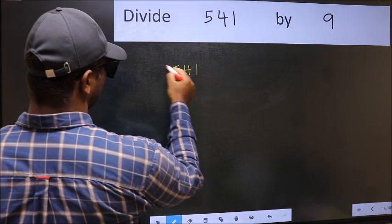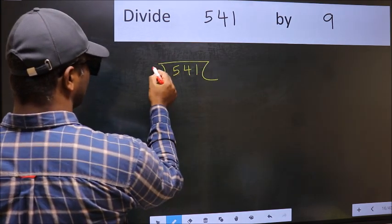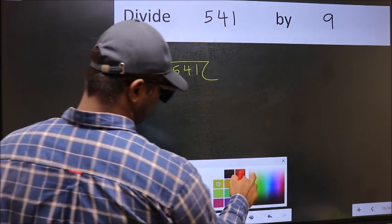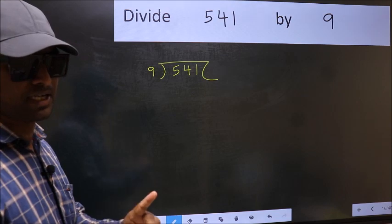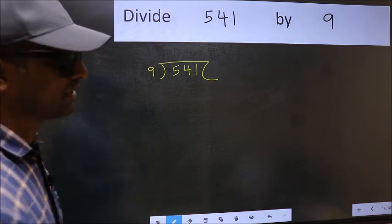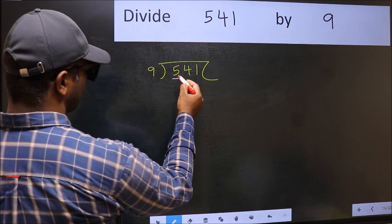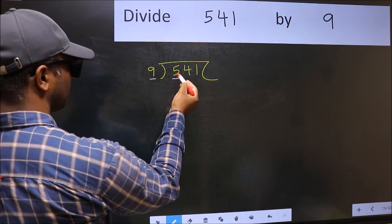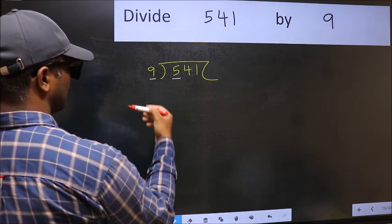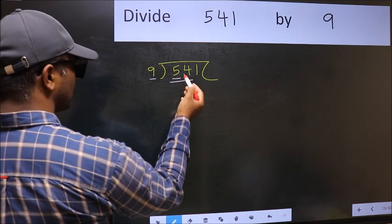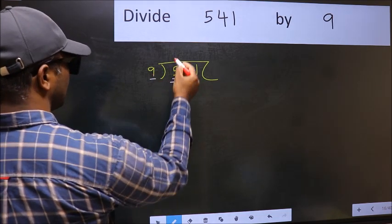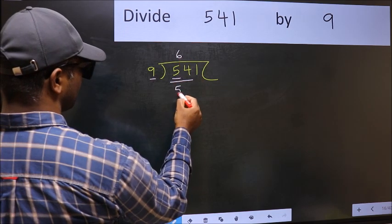541 and 9 here. This is your step 1. Next, here we have 5 and here 9. 5 is smaller than 9, so we should take 2 numbers, 54. When do we get 54 in 9 table? 9 times 6 is 54.